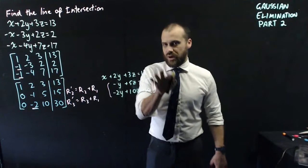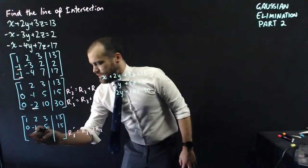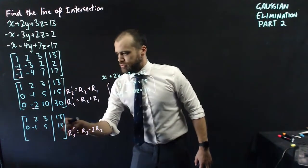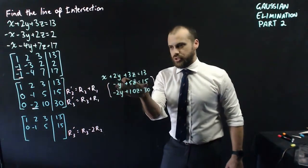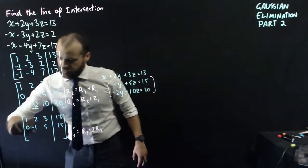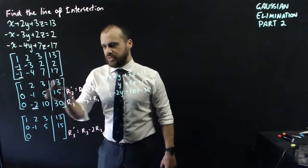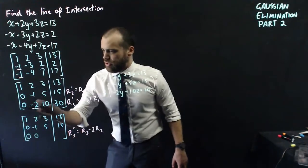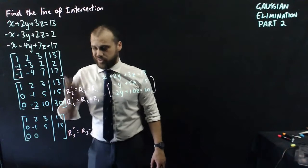And the way I'm going to do that is by taking row three and subtracting two times row two. In other words, taking this equation and subtracting two times this equation. Alright, so zero minus zero is going to be zero. Negative two minus two times negative one. That's negative two minus negative two, which is zero. Ten minus two times five. That's ten minus ten, which is zero.